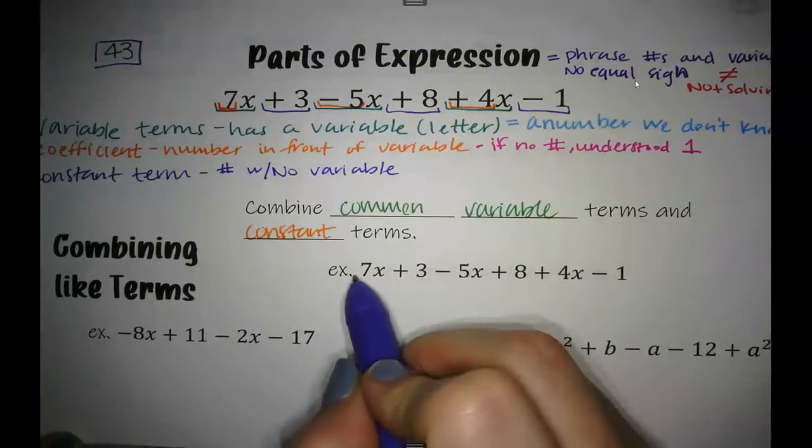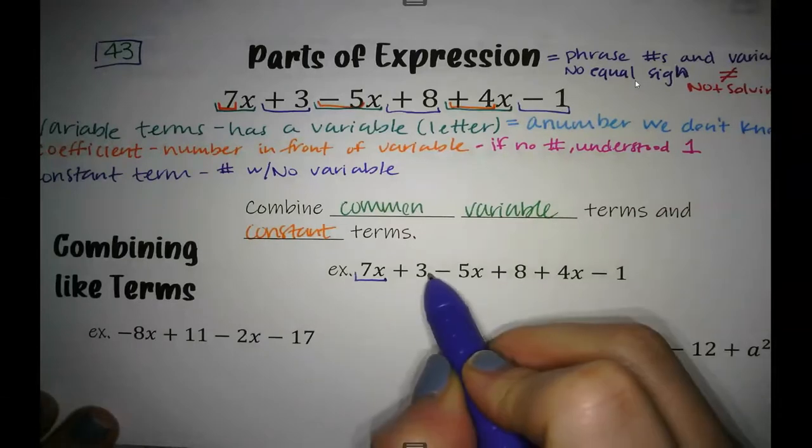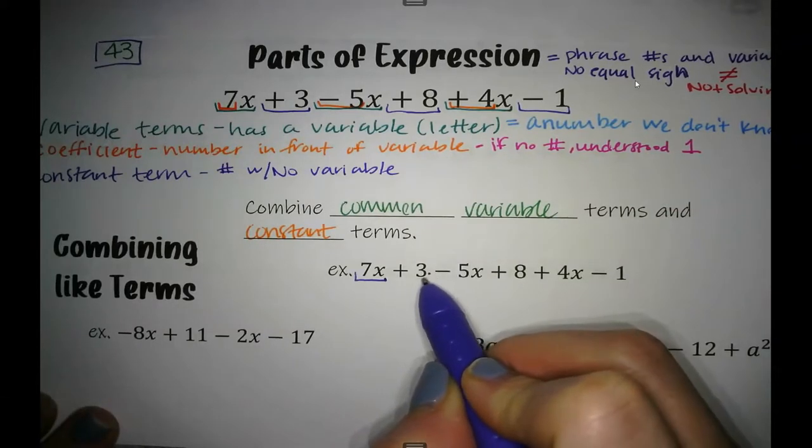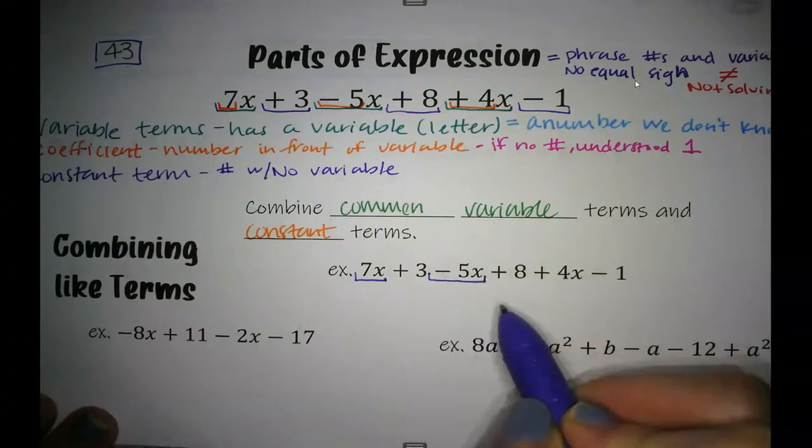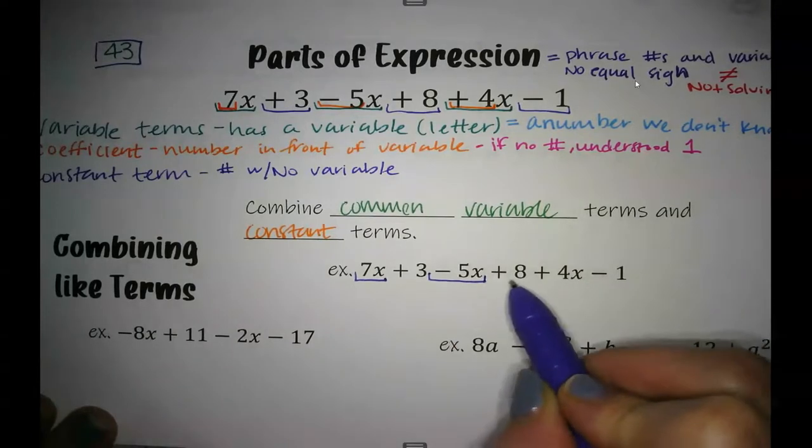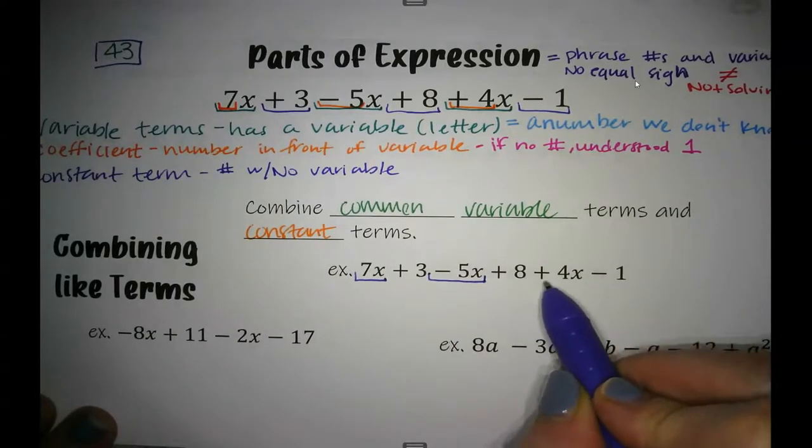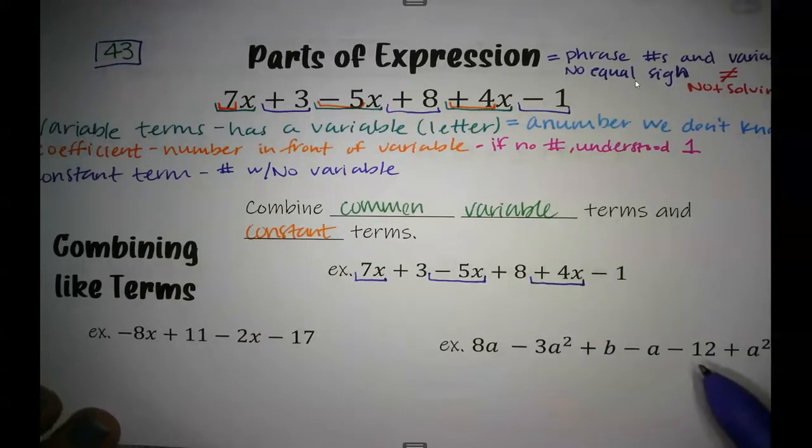I have this 7x. I'm looking for another term that just has an x. We've got a 3, that doesn't have an x, so that's not a common term. I've got a negative 5x, that does have an x, so that's like this x. 8 has no variable, no x, not common. I've got this 4x, that's the same.